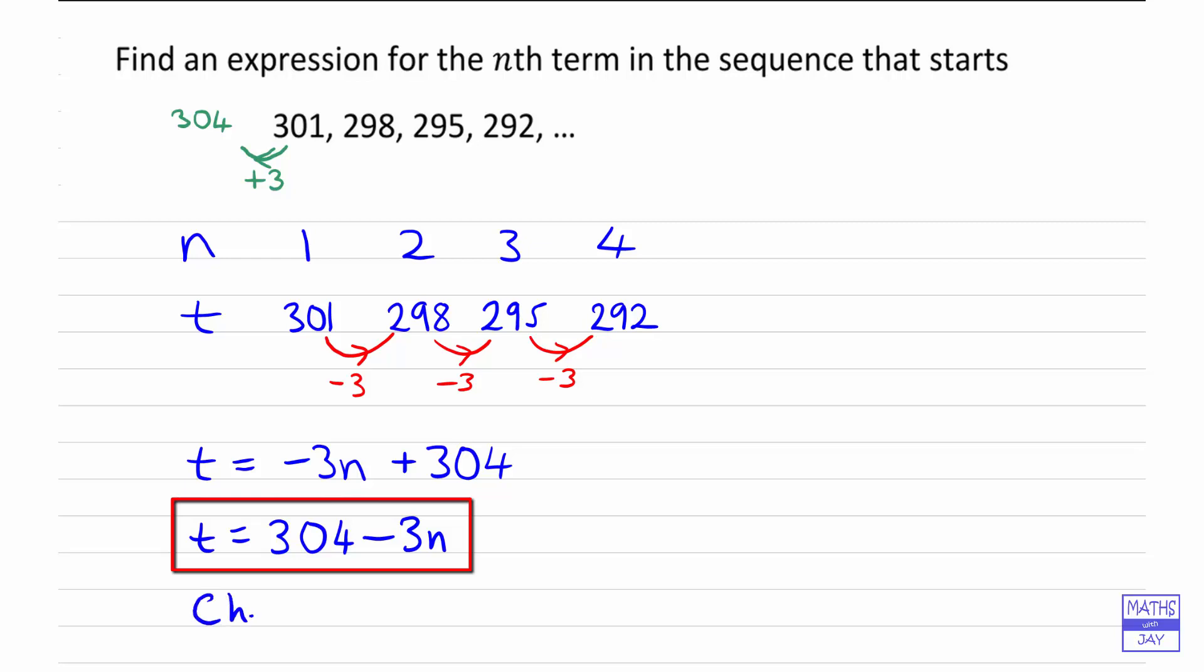And it's a good idea to check the answer. So that means we would put in one of the values of n that we've got. Best not to try 1 because that's a bit too simple really, but 2, 3, or 4 could be checked. So let's check n = 2.